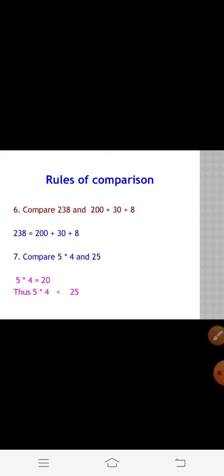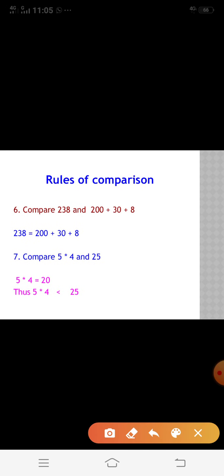They will also ask comparison like this: compare 238 and 200 + 30 + 8. For that, we have to add 200 + 30 + 8, which gives us 238, so both are equal and we use the equal symbol. They will also ask: compare 5 × 4 and 25. We have to solve the left side — 5 × 4 is 20. When comparing 20 with 25, it is the smaller number, so 5 × 4 is less than 25.